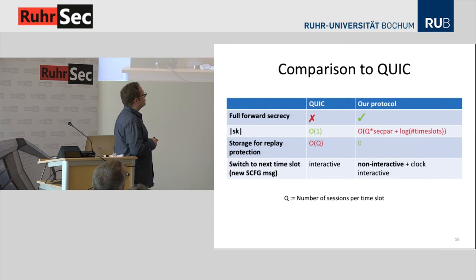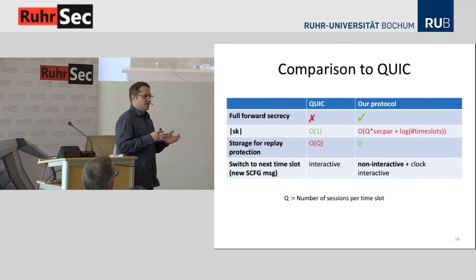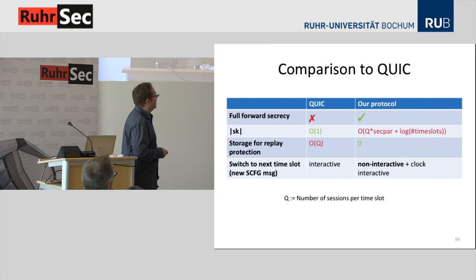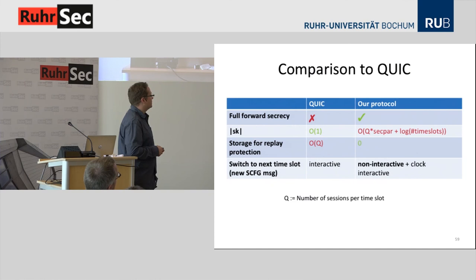Comparing our protocol to QUIC: we get full forward secrecy for all messages. The major drawback is that QUIC has relatively short secret keys while ours grow linearly. But to some degree we get a bit back, because QUIC needs to store all messages to prevent replay attacks — which costs storage in the order of Q values — while we do not need this at all since it's already implicitly contained in our secret key. Also, switching to the next time slot requires a server config message for QUIC, while we can do this non-interactively.